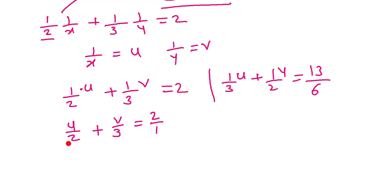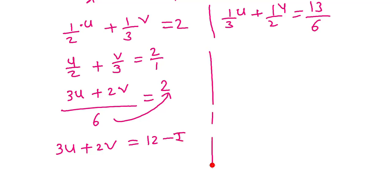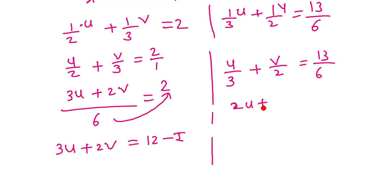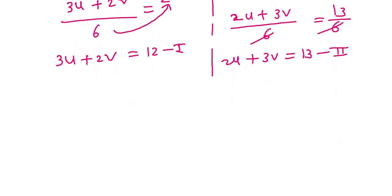For the second equation: u/3 + v/2 = 13/6. Cross-multiplying: 2u + 3v = 13. This is equation number 2. Remember, we ultimately need to find x and y, not u and v.